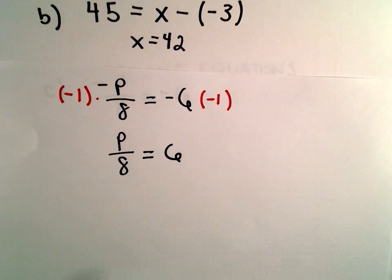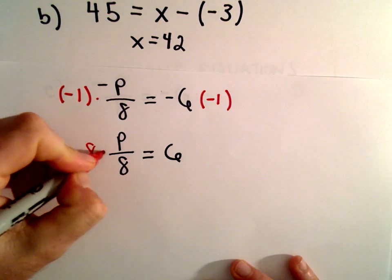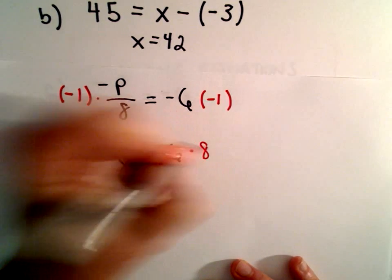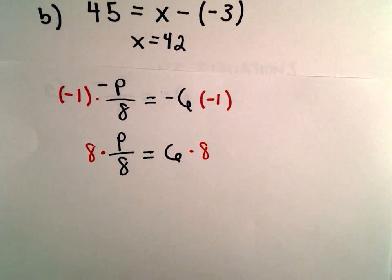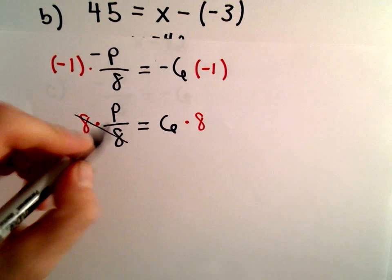Now, the last thing we're going to do is simply multiply both sides by 8. Since we're dividing by 8 on the left side, we'll multiply by 8. The 8s will cancel out.